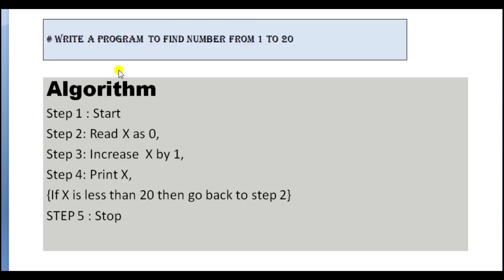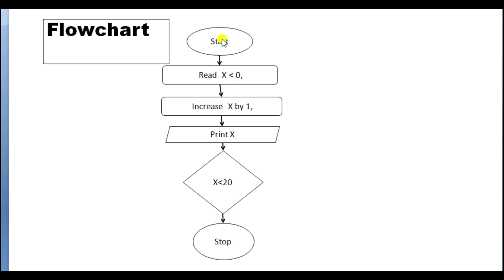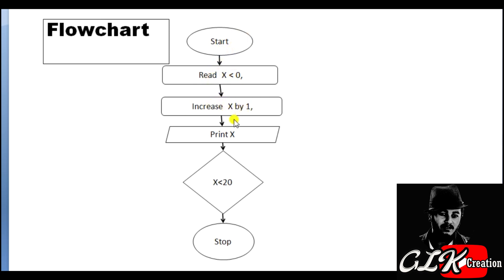In another program: write a program to print numbers from 1 to 20. In algorithm — Step 1: Start. Step 2: Read x as 0. Step 3: Increase x by 1. Step 4: Print x. If x is less than 20, then we have to go back; otherwise stop the program. In the flowchart, we start, then read x as 0, increase x by 1, print x. If x is less than 20, we loop back; otherwise stop the program.